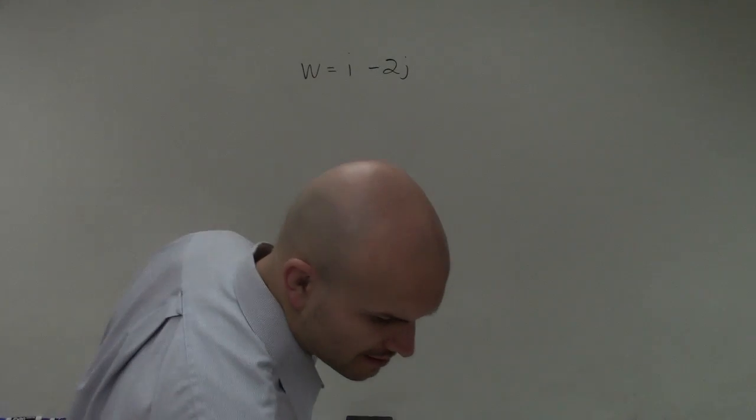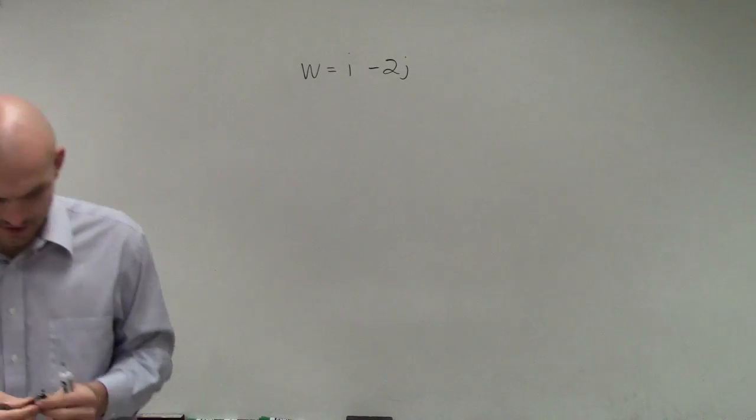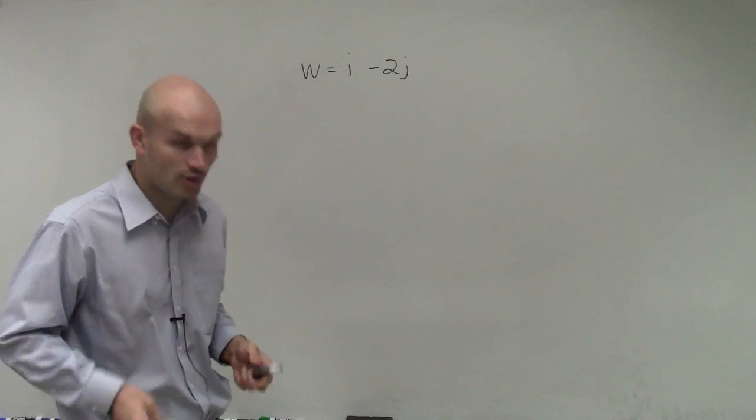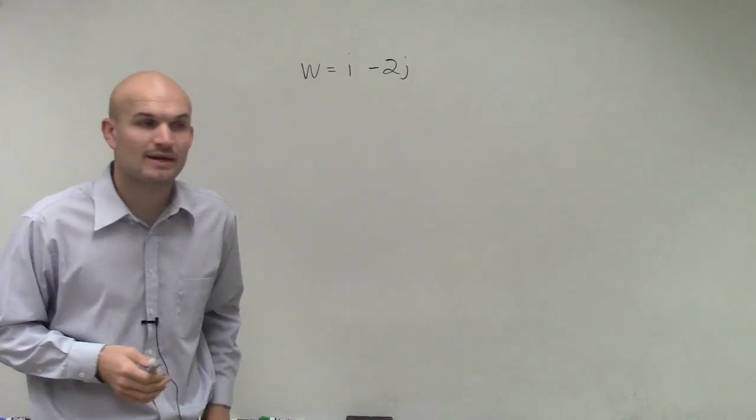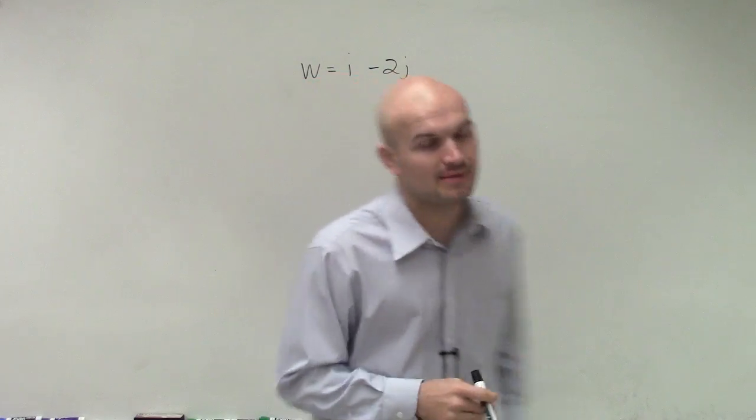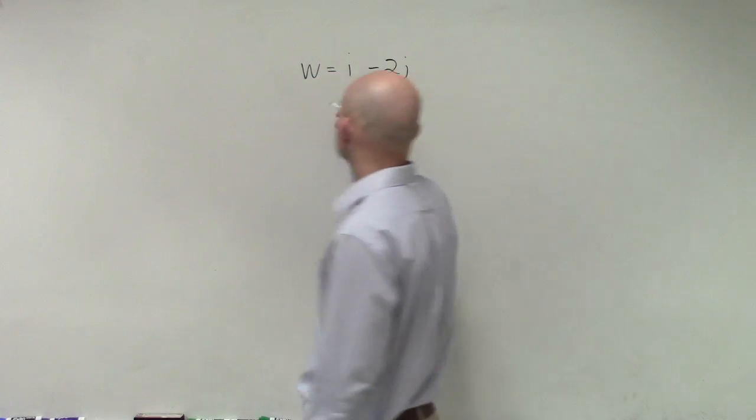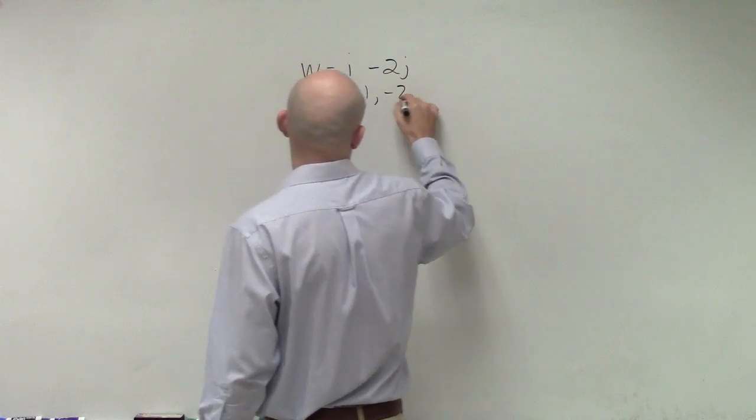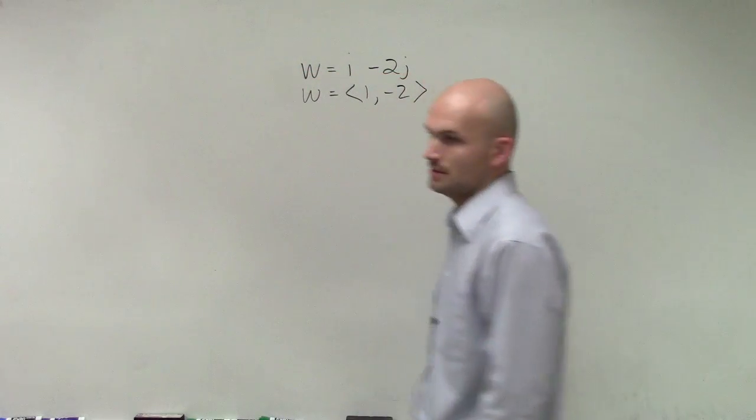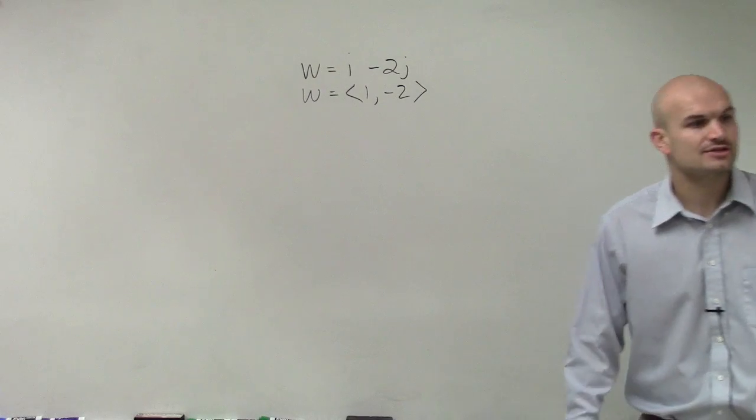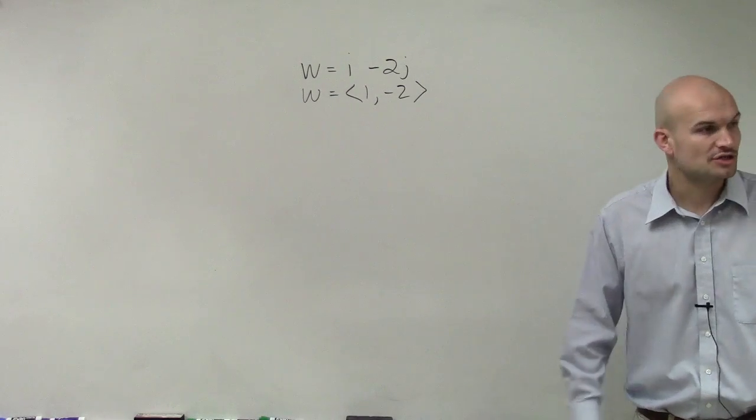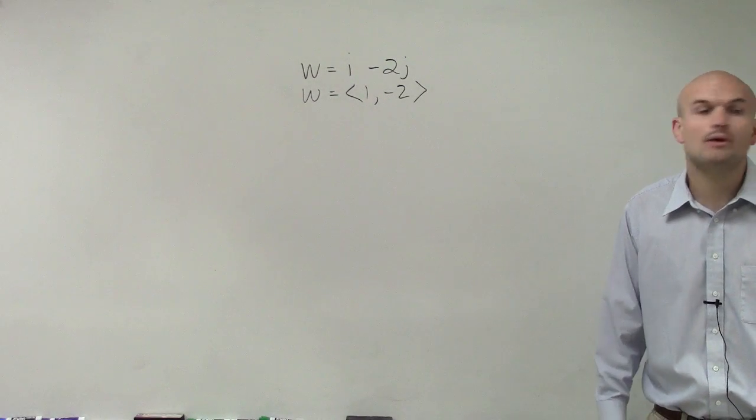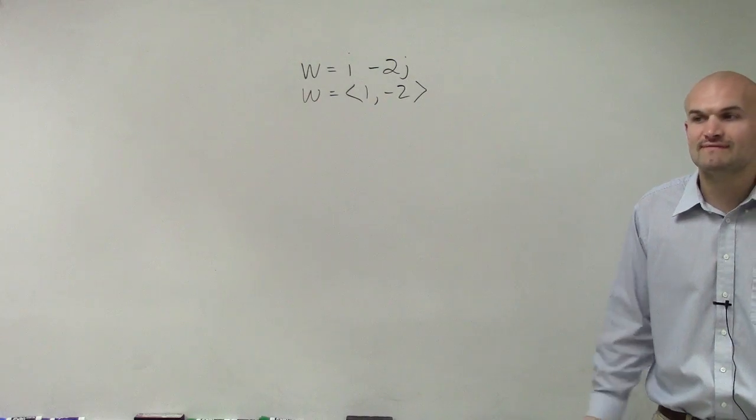So to find the unit vector, what we're going to be looking at is the first thing we want to do is write this down in component form. Remember, whenever you have a vector written as a linear combination, we can rewrite it as component form by saying w equals 1, negative 2. Just take your coefficients of your i and your j, and you can write it as your component form.